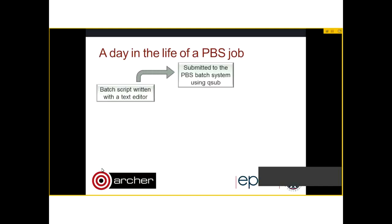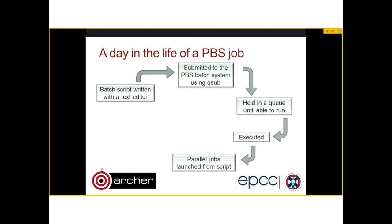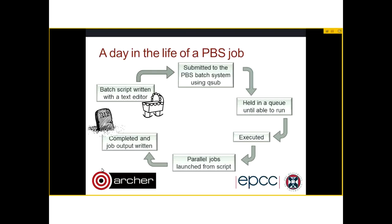Rather than do boring slides, I've tried to illustrate a day in the life of a PBS job, following the various stages it goes through on Archer. You write a batch script with a text editor, submit the job using QSub, the job is held in a queue until it's able to run, then it's executed. Parallel jobs are launched from the script, and finally the job completes and output is written. You're also charged at that point.